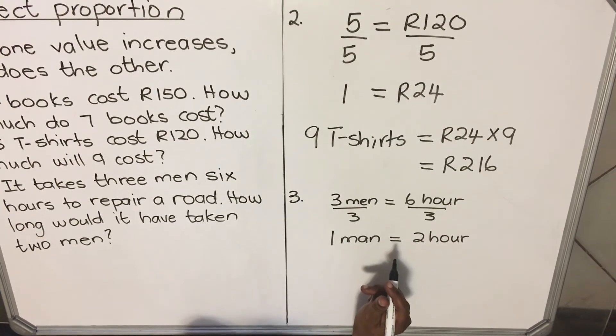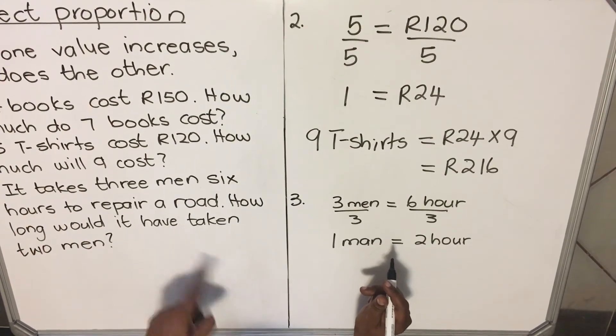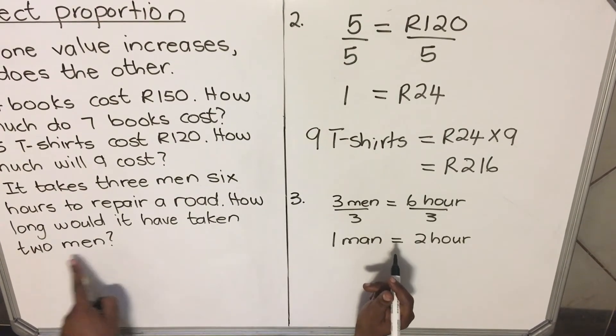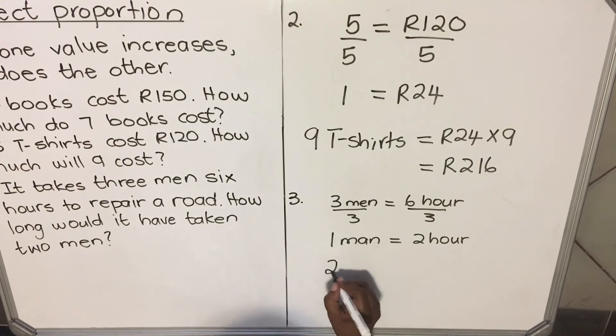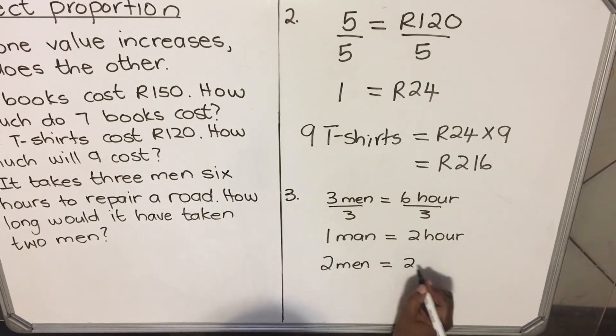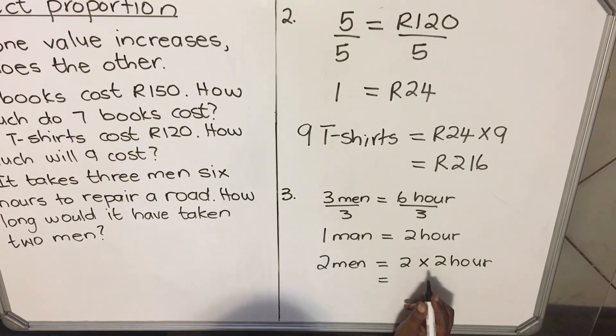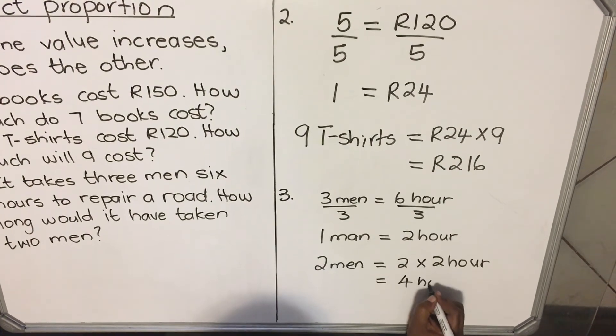Then our question was asking us how long would it take for two men to repair the road? So two men equals two times two hours that is taken by one man. So it's four hours.